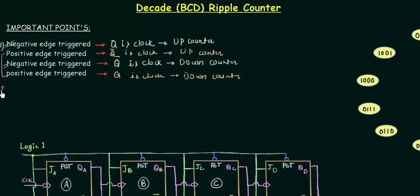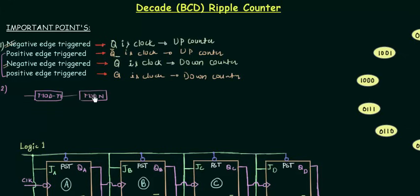Now we move to the second important point: cascading of counters. If the first counter has modulus m and the second counter has modulus n, and we cascade them, the resulting counter will have a modulus equal to m×n. These two points are easy but very important.